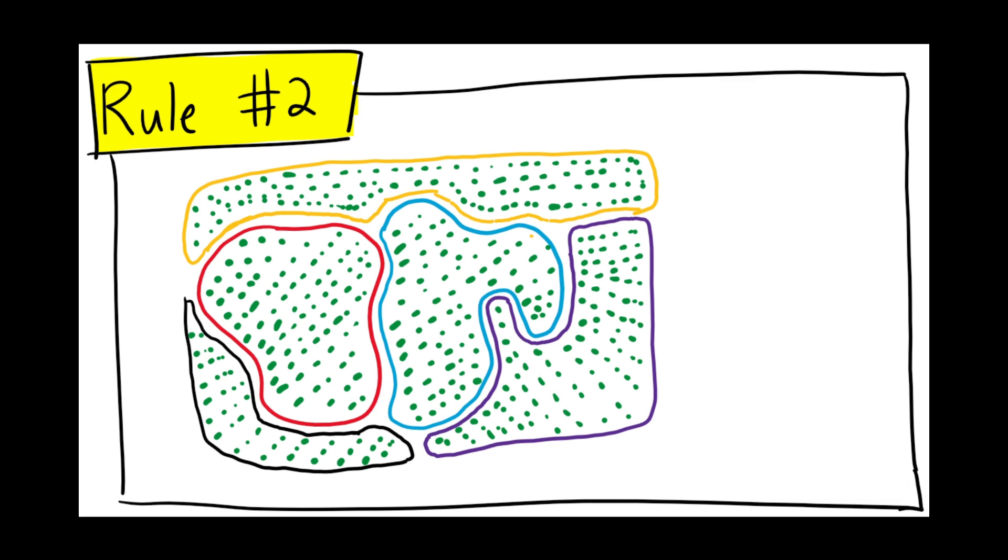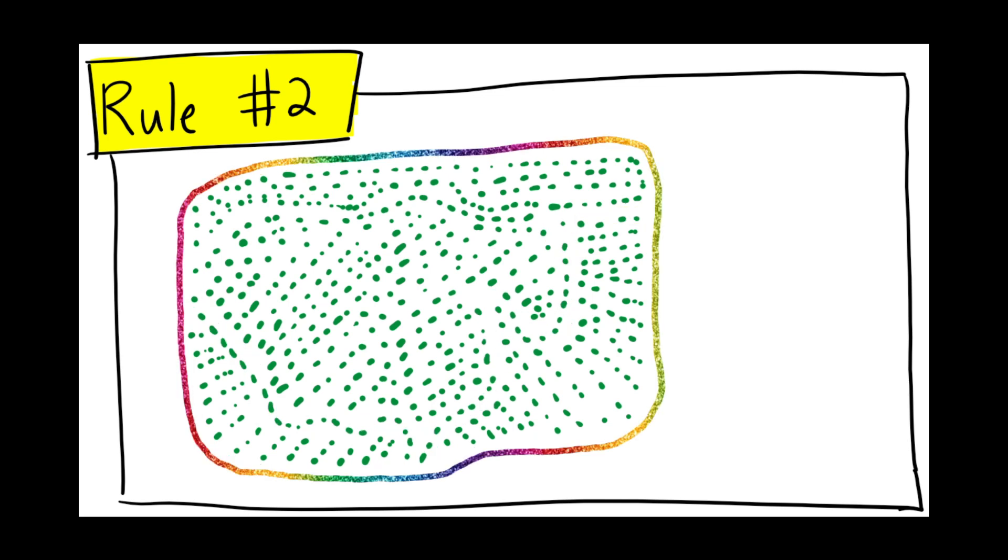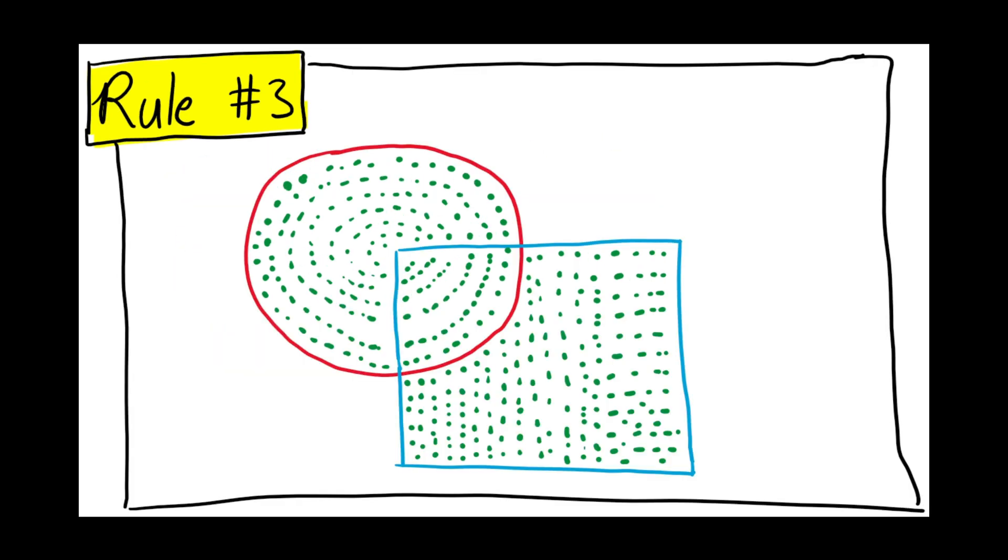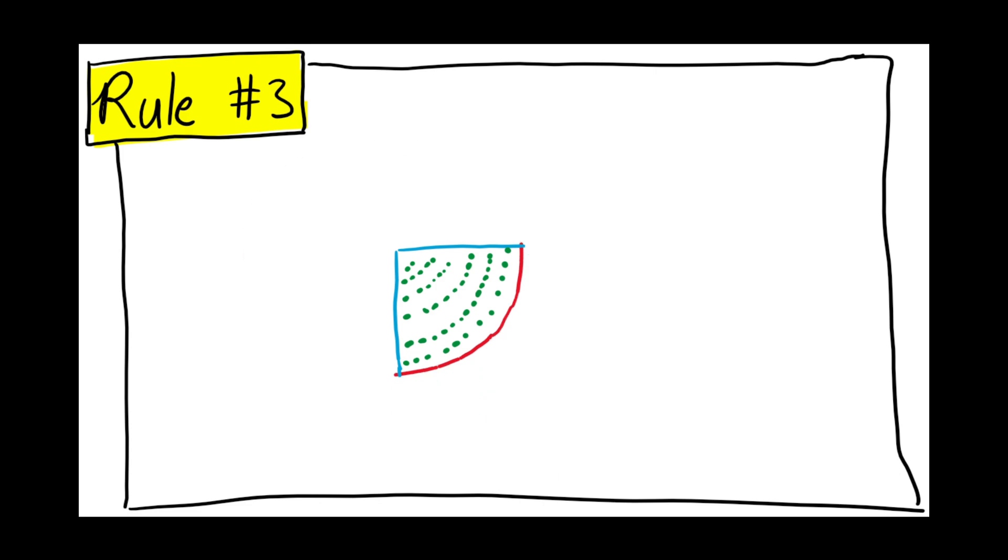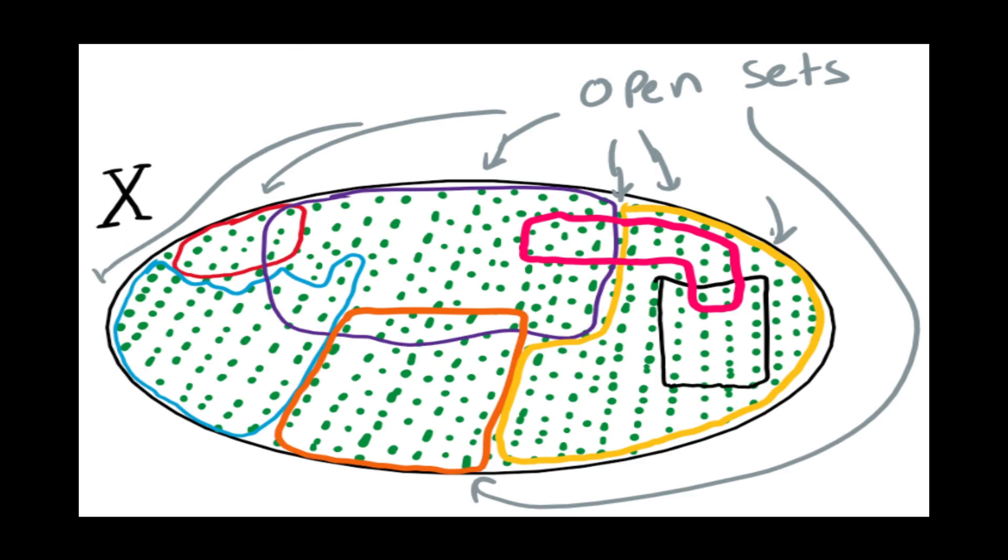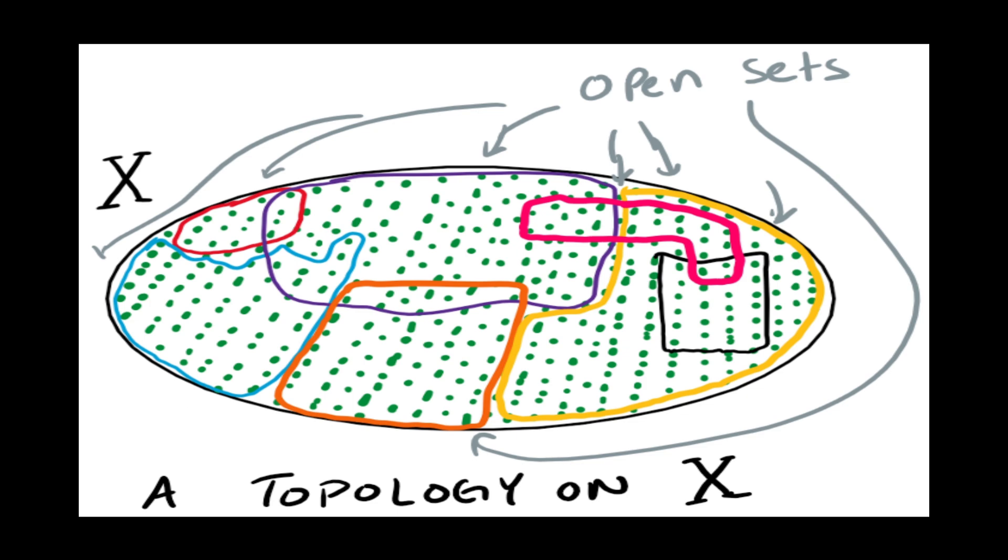Two: No matter how many subsets in the collection you combine, you get another subset in the collection. Three: When you look at the overlap of two subsets in the collection, it's another subset in the collection. We call the subsets in the collection open sets, and we call the collection of open sets a topology on X.